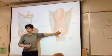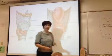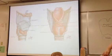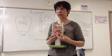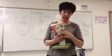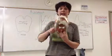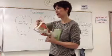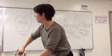From a posterior view, we can see the posterior cricoarytenoid muscle. It comes off the posterior surface of the cricoid cartilage, wraps around, and grabs onto the side of the arytenoid cartilage. This pair of posterior cricoarytenoid muscles is easily seen on the model, and when pulled, you can see how they affect the opening between the vocal ligaments.